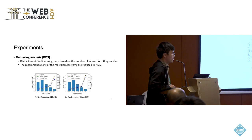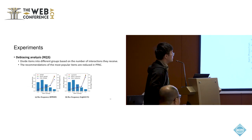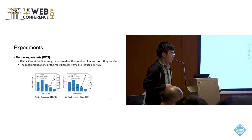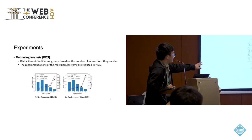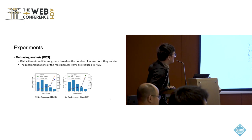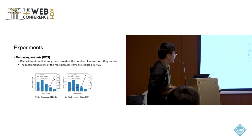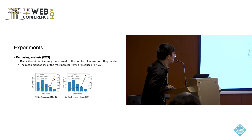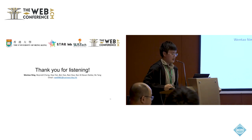In case studies, we divided items into groups based on their popularity, where the x-axis represents the number of interactions. The top 50% most popular items are the most popular group. Comparing PPAC with base models and MSAR (a state-of-the-art debiasing method), we find that our method reduces recommendation frequency of the most popular items and increases recommendations of less popular items. Thank you.